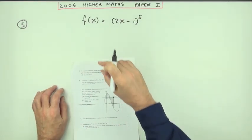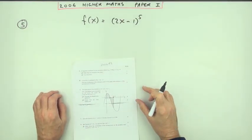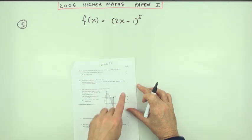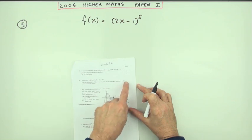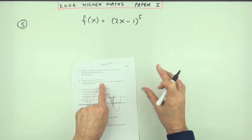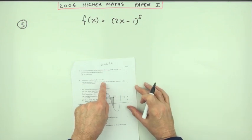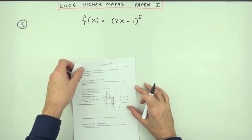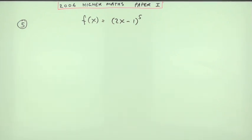Number five from the 2006 Higher Maths Paper 1 — finding the stationary point on a graph, worth seven marks. This question is about finding the stationary point and determining its nature.